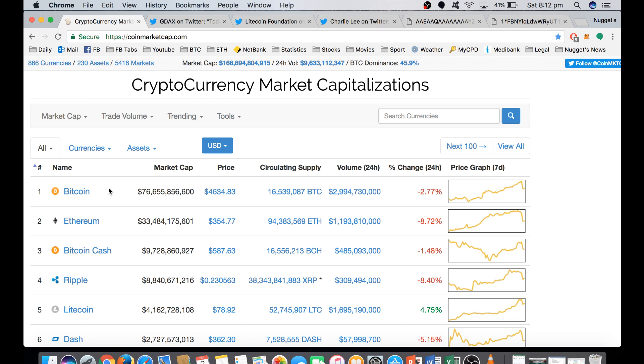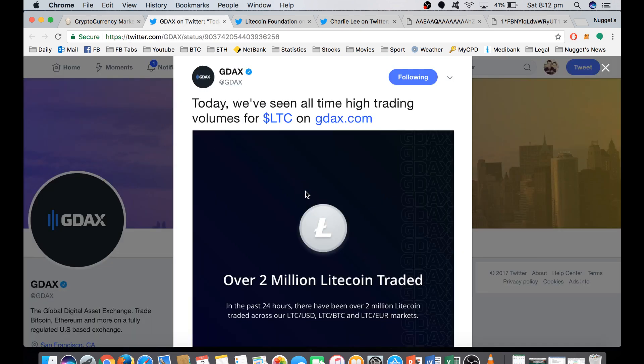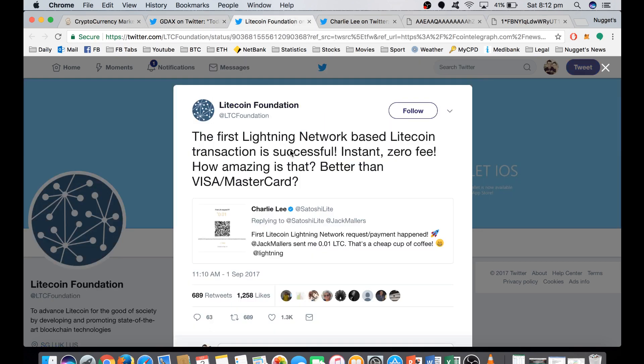So now that Litecoin and Bitcoin have activated SegWit, it basically upgrades the network to a way that allows easily for the implementation of the lightning network, which is instant and zero fee transactions between individuals. I'm talking about exactly how that works. So we obviously saw Litecoin have a big run-up in price today on the news that they'd successfully sent that first transaction over the lightning network, instant and zero fee.